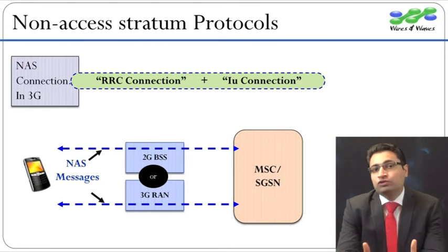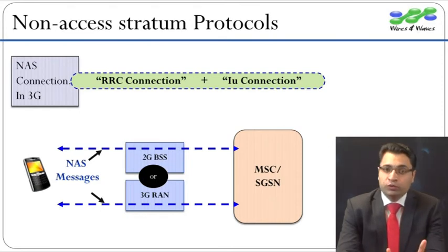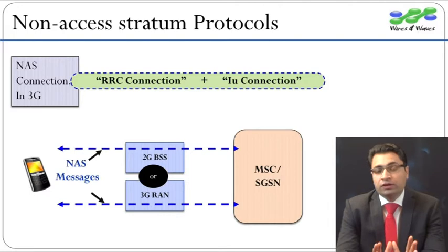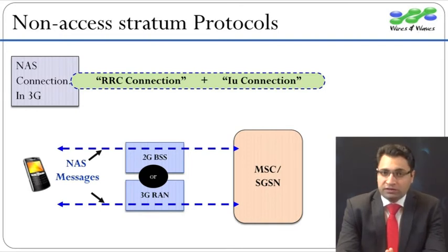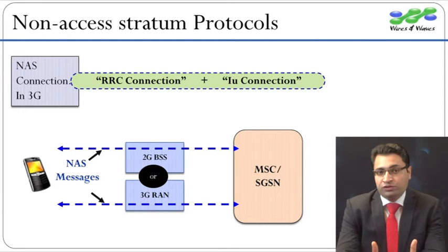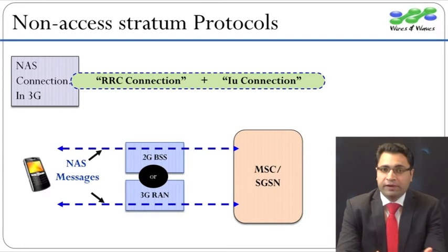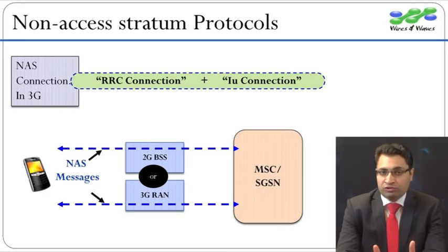We have been looking at UTRAN so far. Let us zoom out and analyze the signaling between UE and core network. The protocols between UE and core network are called Non-Access Stratum protocols, or NAS protocols. In this example, the NAS messages are transported with the help of access stratum protocols like RRC and RANAP.